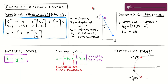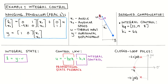The plant for this example is our familiar frictionless pendulum with a length of one meter and a tip mass of one kilogram. The input is the applied torque U, the states are the pendulum angle and angular velocity, and the output is the horizontal displacement of the pendulum tip Y.